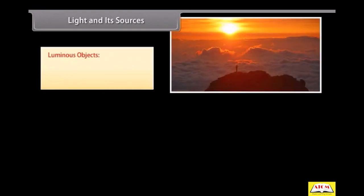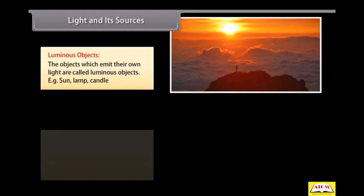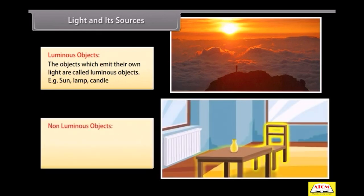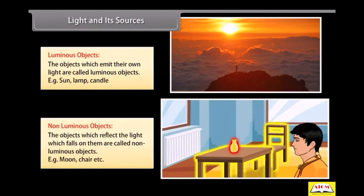Luminous objects are the objects which emit their own light. Examples: Sun, lamp, candle. Non-luminous objects are the objects which reflect the light which falls on them. Examples: moon, chair, etc.